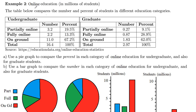In example two, we're going to look at some graphical representations of data related to online education. All the values are given in millions of students — those are the raw values. So we're comparing undergraduate students: partially online, fully online, and on-ground.